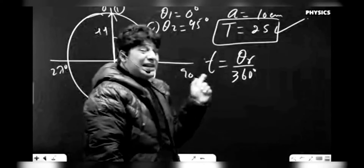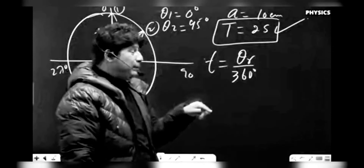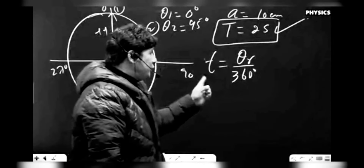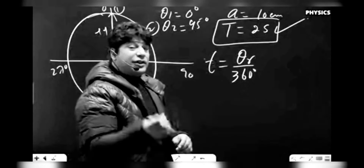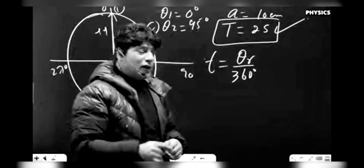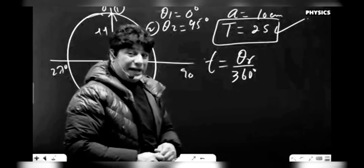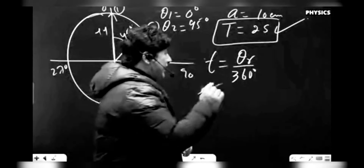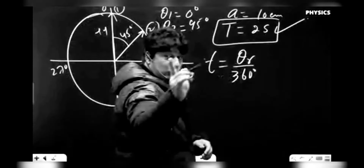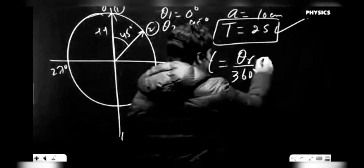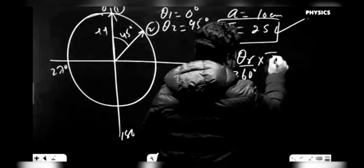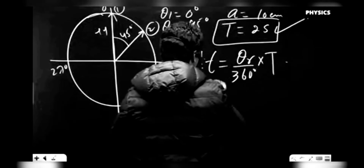The time that it takes to go from position 1 to position 2 is given by theta r, the angle of rotation, upon 360 degrees — so the angle is to be taken in degrees — multiplied by the time period of the oscillation.